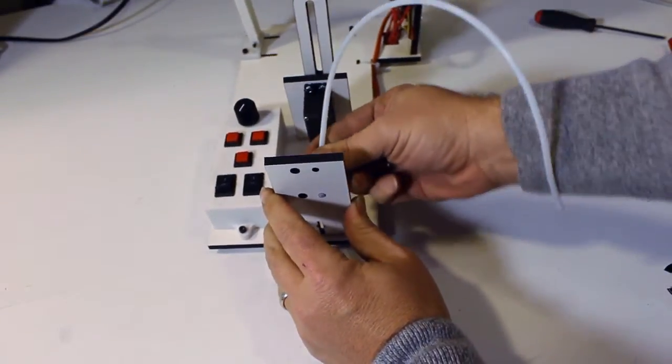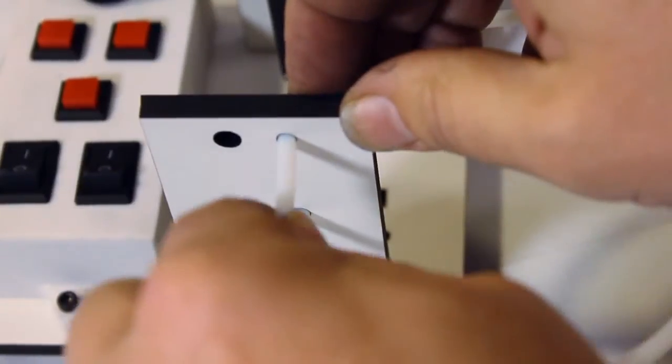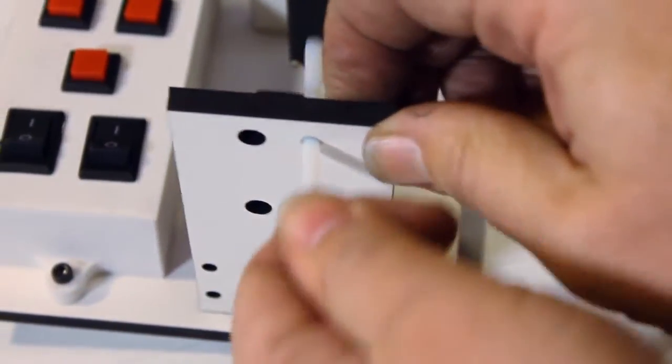Put it in through the top of the bottom hole, loop it around, and come up from under on the top hole.